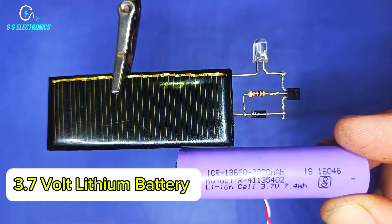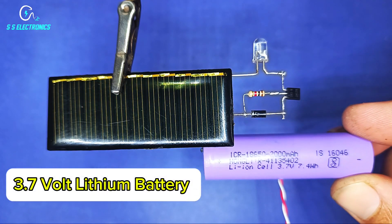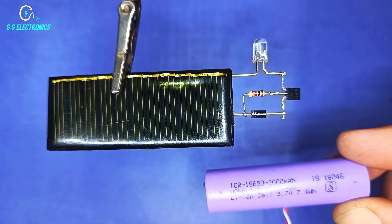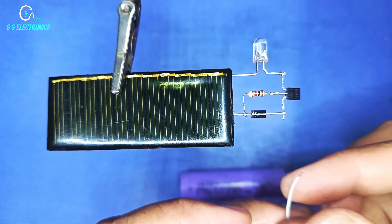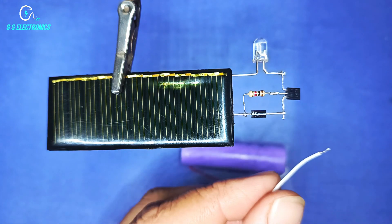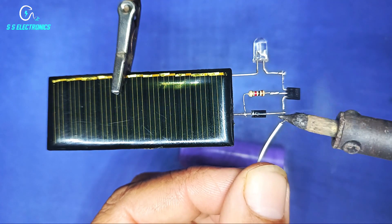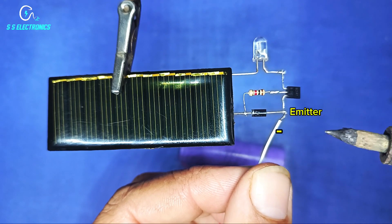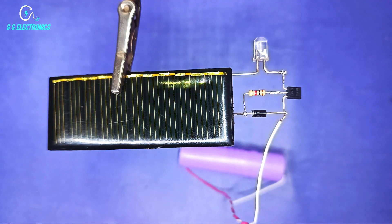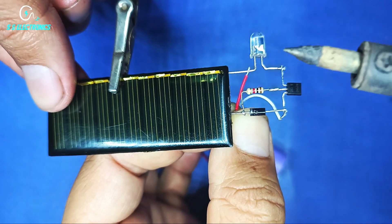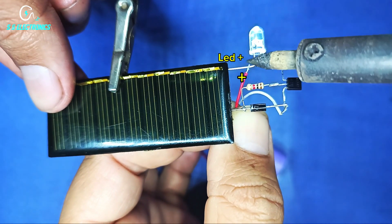3.7 volt lithium battery. Lithium battery negative wire connecting with transistor emitter pin. Lithium battery positive wire connecting with LED positive side.